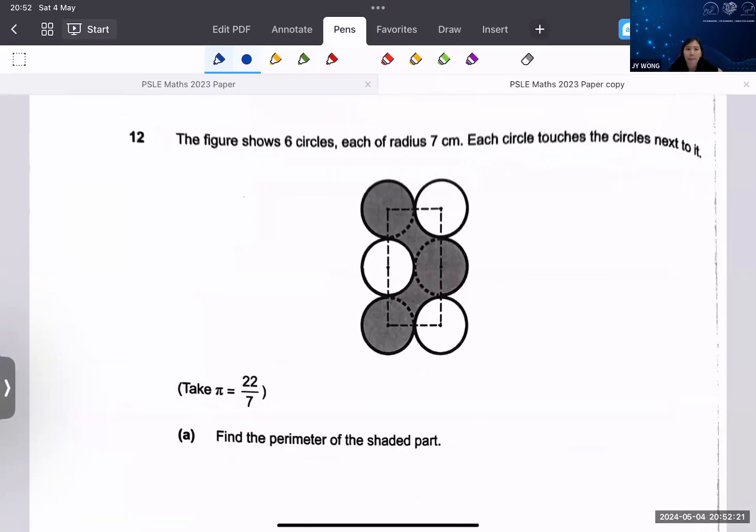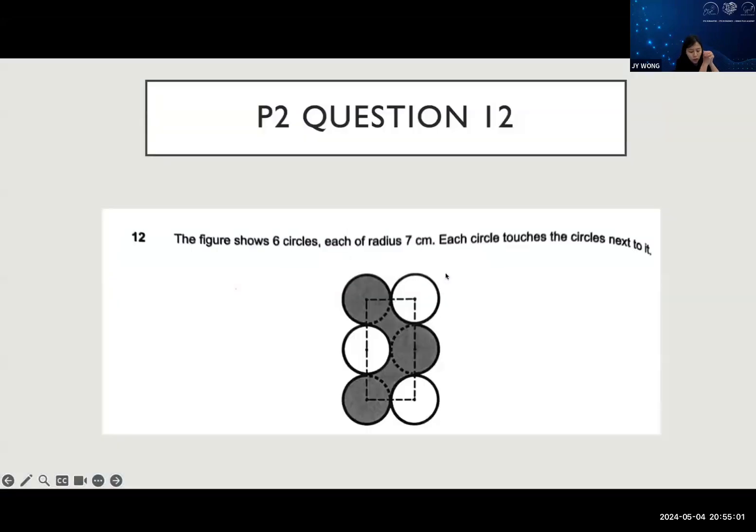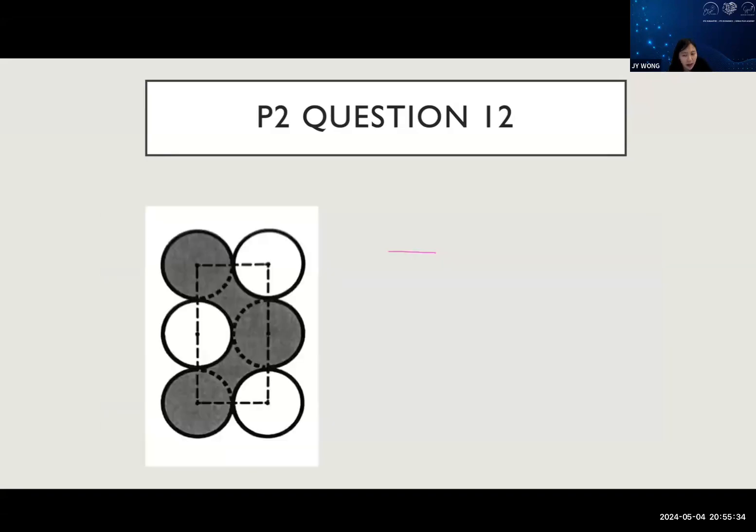Okay, this is question 12. The figure shows six circles, each radius is 7 cm. Each circle touches the circle next to it and the circles are all identical - each has a radius of 7 cm.